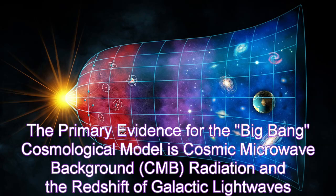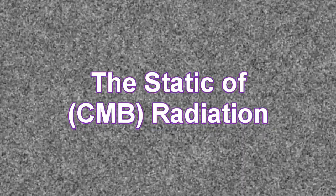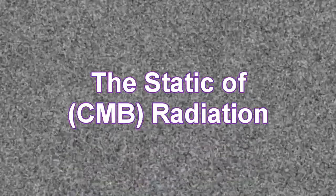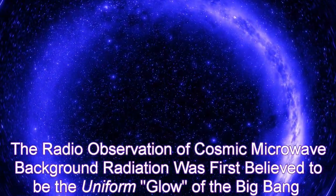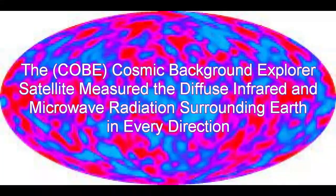The primary evidence for the Big Bang cosmological model is cosmic microwave background radiation and the redshift of galactic light waves. The radio observation of cosmic microwave background radiation was first believed to be the uniform glow or echo of the Big Bang. The COBE satellite measured the diffuse infrared and microwave radiation surrounding Earth in every direction.